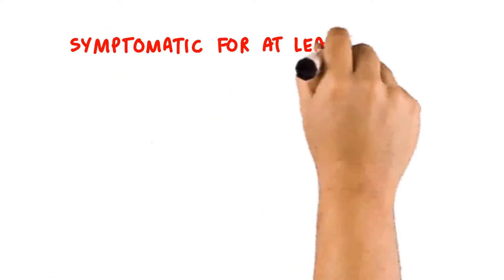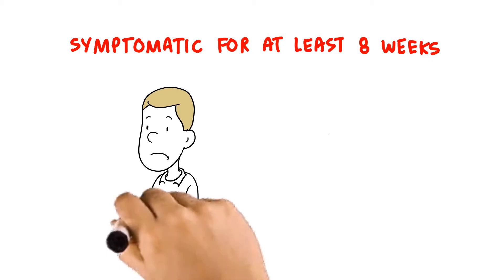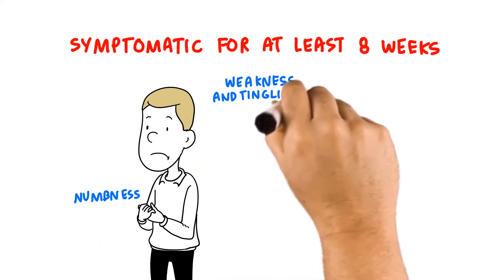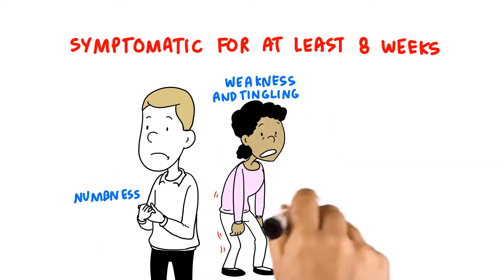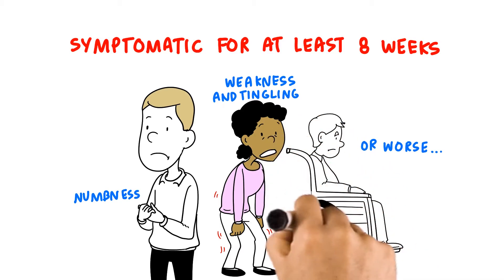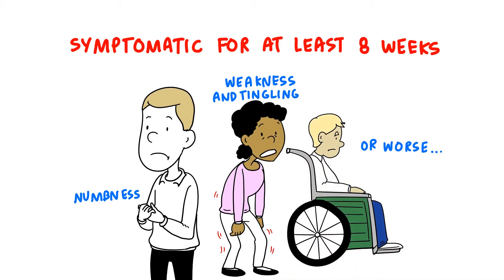Symptoms develop steadily over a period of at least eight weeks, usually beginning with numbness, weakness, or tingling in your legs and arms, which gets progressively worse as time goes on. Additionally, about 10% of cases start as GBS, but progress to CIDP as symptoms become chronic.